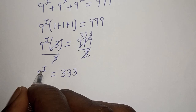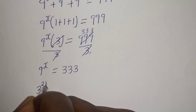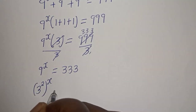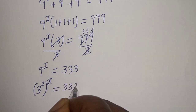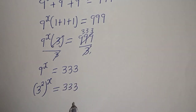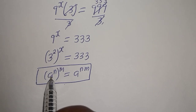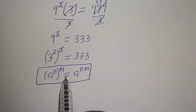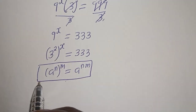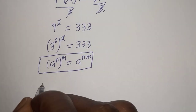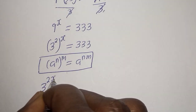On the left hand side, 9 can be written as 3 squared, so this becomes (3²)^s equal to 333. Using the exponential rule that (a^n)^m equals a^(nm), this can be written as 3 raised to power 2s equal to 333.